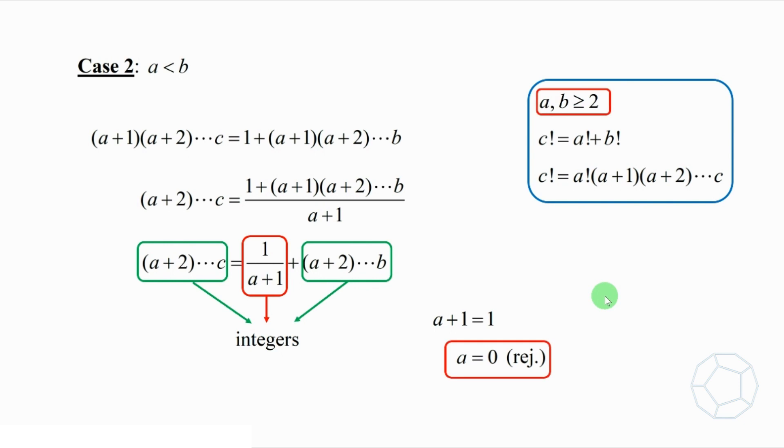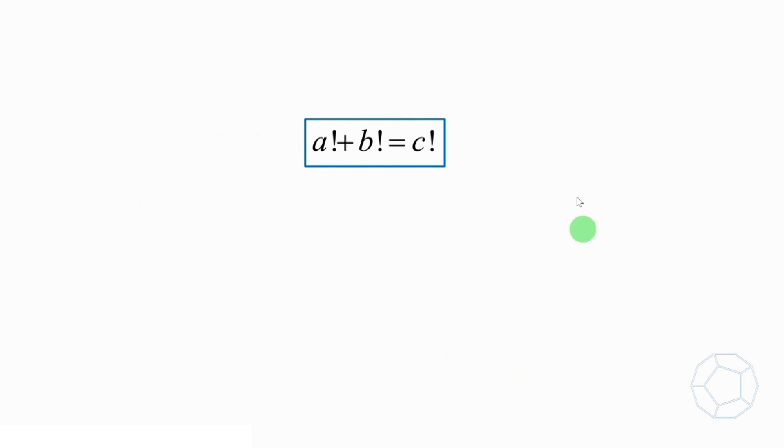In both cases, there are no solutions for a and b larger than or equal to 2. We only have the four answers solved in the introduction. The wonderful factorial equation is as simple as 1 plus 1 equals 2.